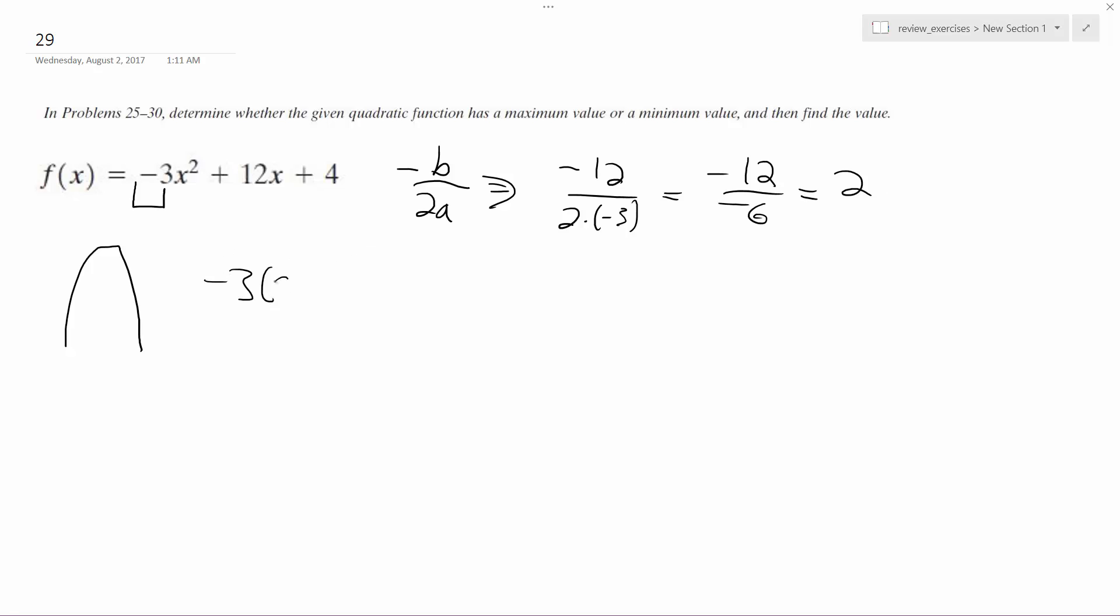So I plug this back in, so negative 3 times 2 squared plus 12 times 2 plus 4. So I get negative 12 plus 24 plus 4, so I get 12 plus 4, so I get 16.